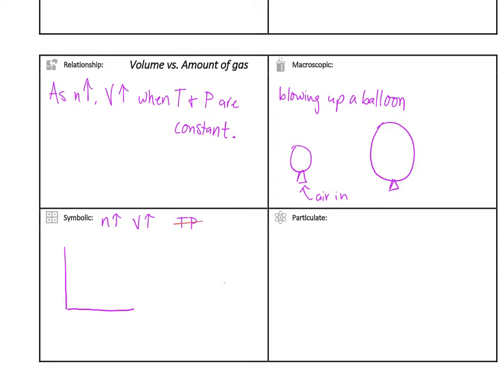So the way that this is written, we want moles to be our independent, amount of gas to be independent, so it'll be on the X, volume which is dependent to be on the Y. So this is going to give us a nice linear proportional relationship.